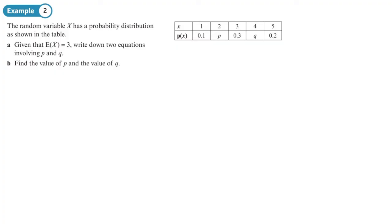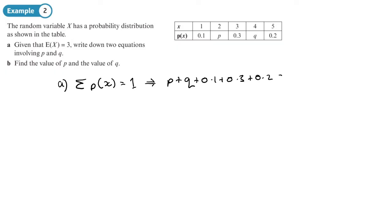A discrete random variable X has a probability distribution as shown in a table. Given that the mean E(X) equals three, write down two equations involving p and q. The first equation comes from the fact that the sum of all probabilities equals one: p + q + 0.1 + 0.3 + 0.2 = 1, which simplifies to p + q = 0.4.